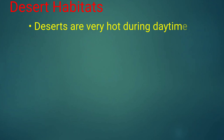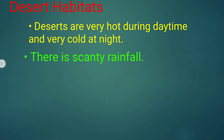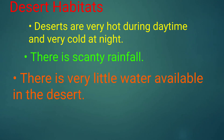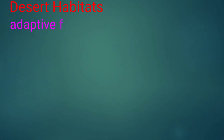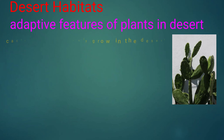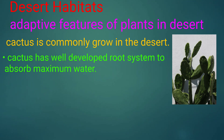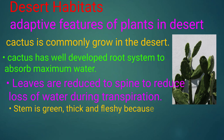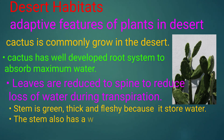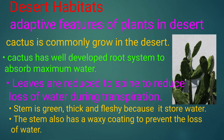First we discuss desert habitats. Deserts are very hot during daytime and very cold at night. There is scanty rainfall and very little water available in desert. Cactus is commonly grown in desert. Cactus has a well-developed root system to absorb maximum water. Leaves are reduced to spines to reduce loss of water during transpiration. The stem is green, thick and fleshy because it stores water, and also has a waxy coating to prevent loss of water.